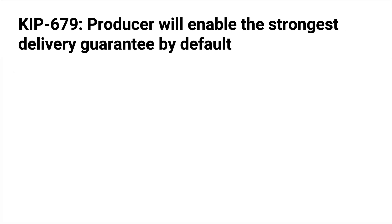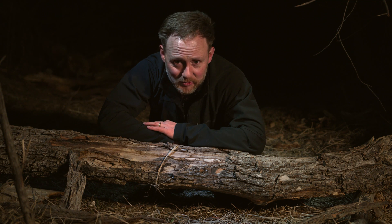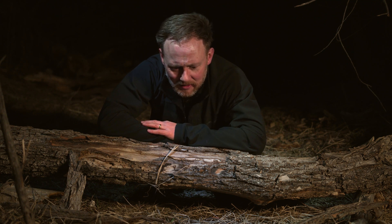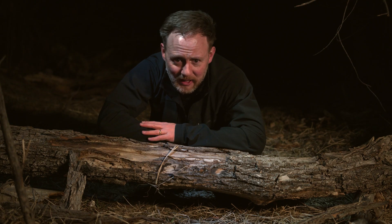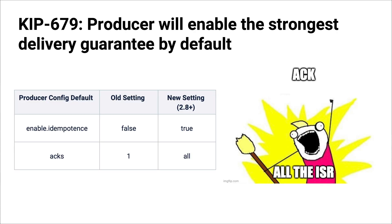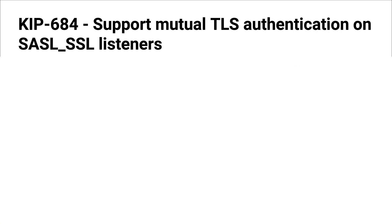KIP-679: Producer will enable the strongest delivery guarantee by default. It's been a while since we had EOS — exactly-once semantics, I believe that was around KIP-98, about four years ago at the time of this recording. It's been with us but not enabled by default. You have two switches: enable.idempotence set to true and acks set to all. Prior to KIP-679, enable.idempotence was off and acks defaulted to one. Now enable.idempotence is on by default and acks is set to all by default. You can still change these settings, but the defaults are more robust for the producer.